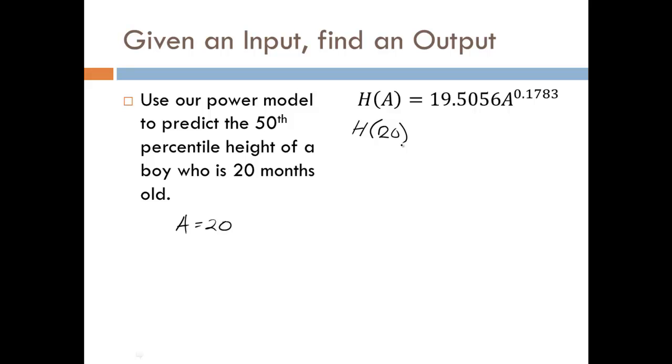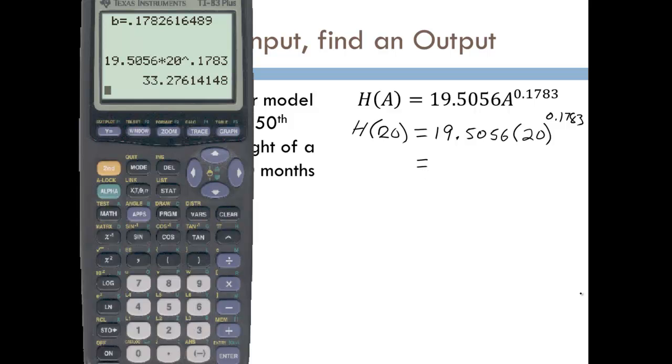And we want the height which means we want to compute the height at 20 months. So H of 20, which again just means we're putting 20 in for the A. So we'll have 19.5056 times 20 to the 0.1783 power. And this is again just something that we can compute on our calculator. And we get 33.28 inches.